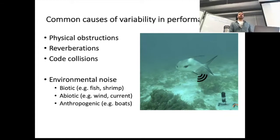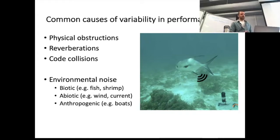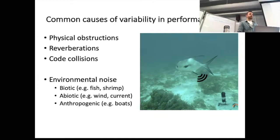A big factor is physical obstructions, which can vary a lot over time — seasonal vegetation, ice cover — things changing the line of sight between the tag and the animal over space and time. You also get code collisions: the more animals in your system in proximity to a receiver, the less detectable other animals are. This is the case for Vemco equipment since it operates on the same frequency. And of course environmental noise is huge — in tropical systems, snapping shrimp and fish calls are a major factor, as are abiotic factors like wind, currents, and anthropogenic sources like boats driving by.